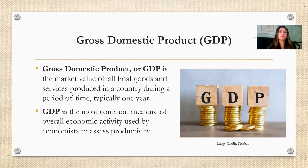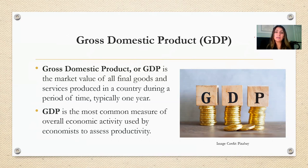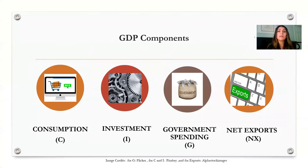GDP is a key measure of economic activity. It gives information about the size of the economy and represents the total value of all final goods and services produced in a country during a period of time. The GDP of the United States is reported on a quarterly basis by the Bureau of Economic Analysis. GDP is one of the most closely watched macroeconomic indicators because economists use it to determine whether an economy is growing or experiencing a recession.